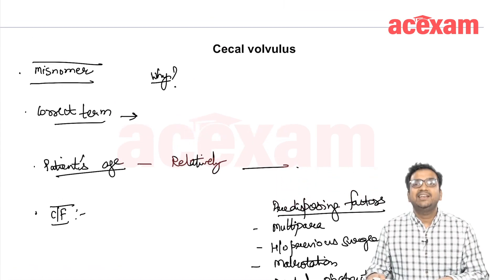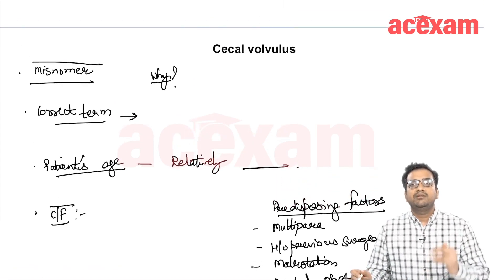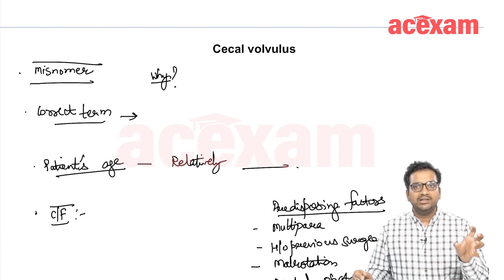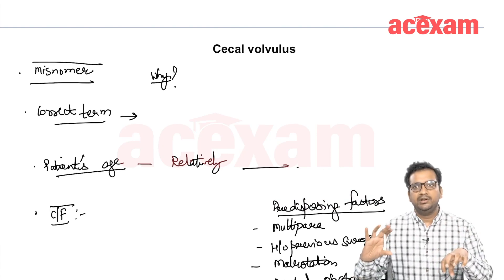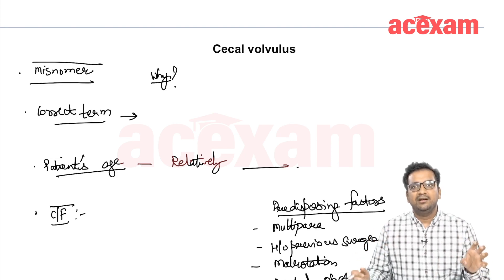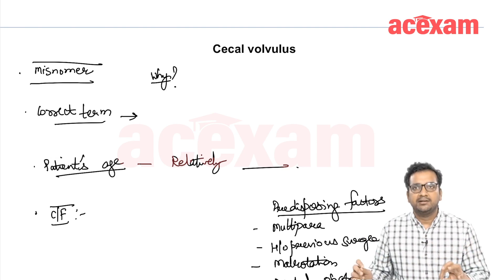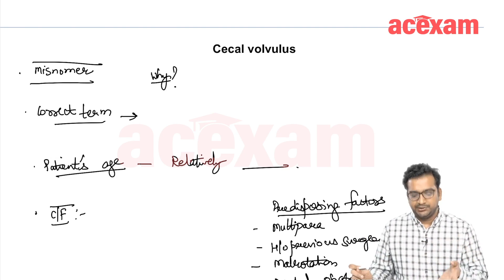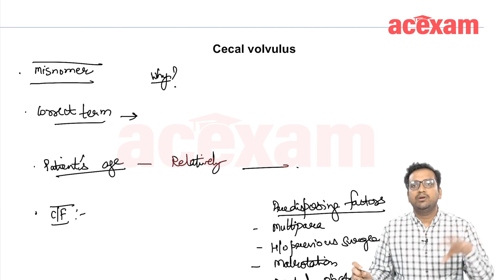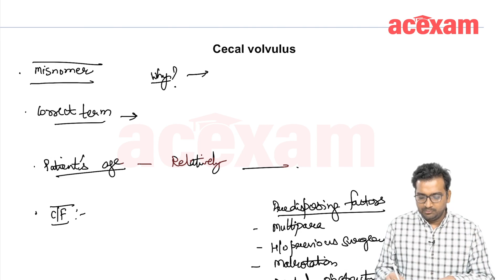Volvulus. This cecal volvulus term is actually a misnomer. It is a misnomer because only the cecum is not rotating. In sigmoid volvulus, only the sigmoid colon was rotating — that was a sigmoid volvulus. Here, along with the cecum, the terminal ileum is also rotating. So ideally, it should be called ileocecal volvulus or ileocecal colic volvulus — that should be the correct term.